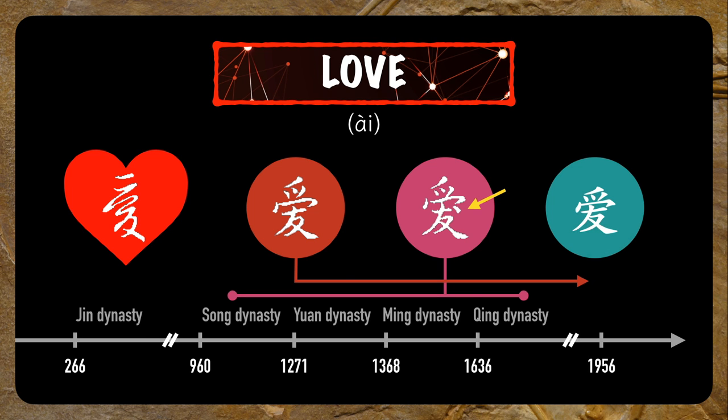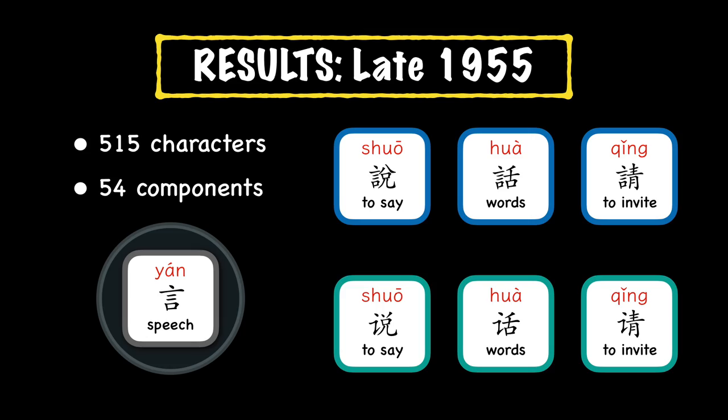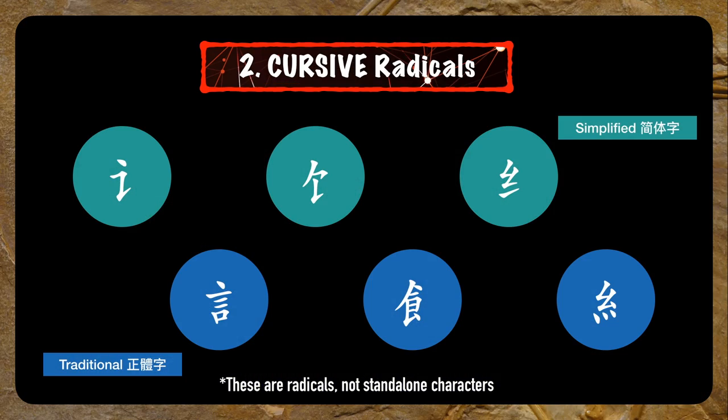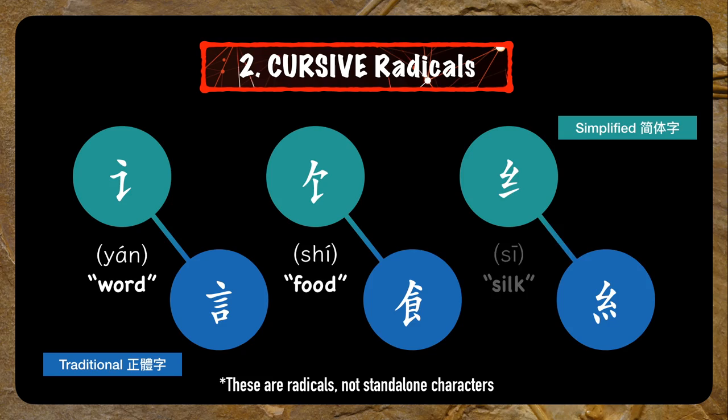This method is also responsible for many of the component simplifications. In 1956, 515 characters and 54 components were simplified, and a lot of those simplified components were taken directly from the cursive forms — like yan, shi, and si.